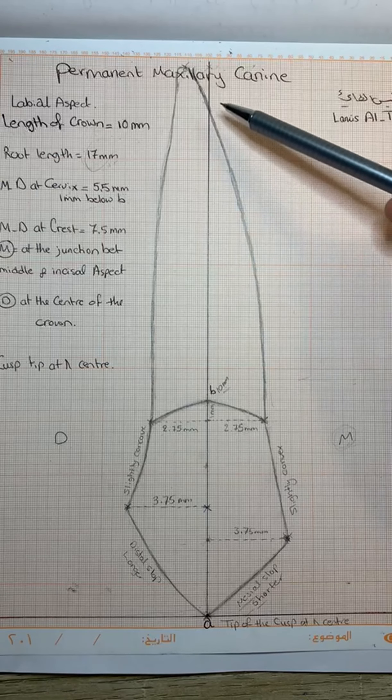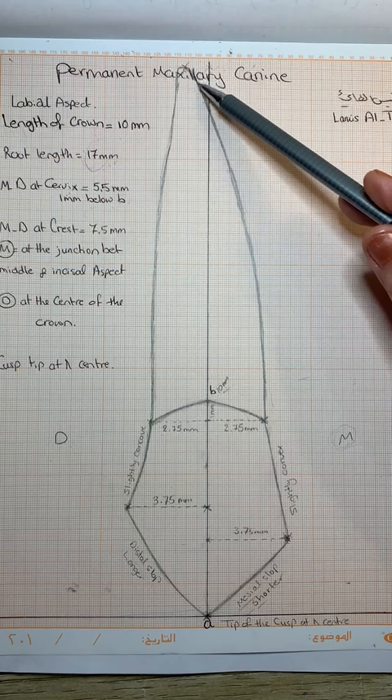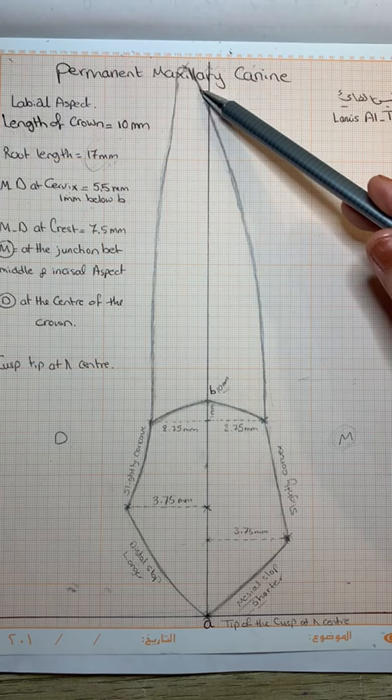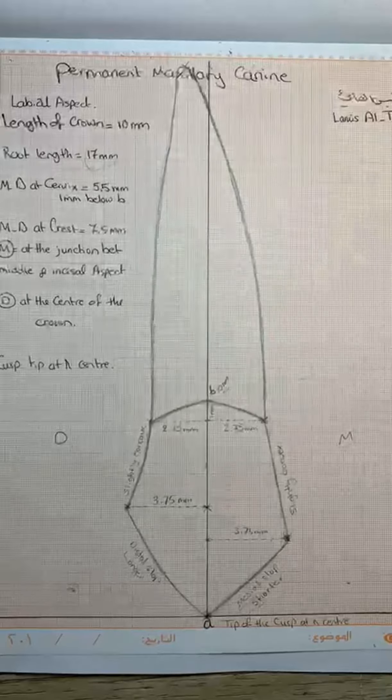As you know, the maxillary canine has the longest root in the dental arch. After finishing the drawing on paper, you must transfer the same drawing onto the wax model.